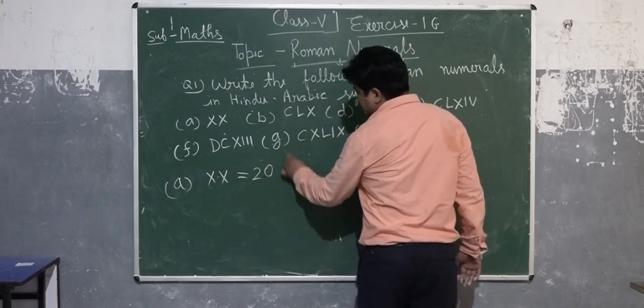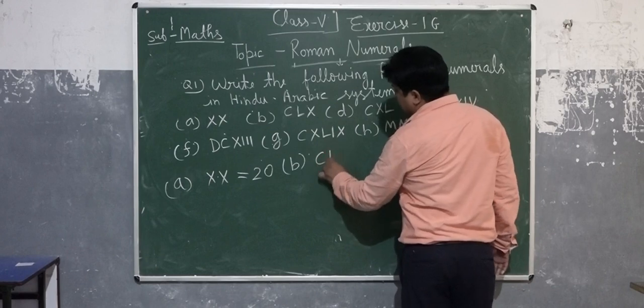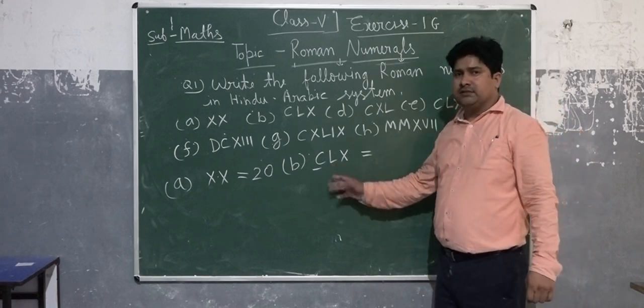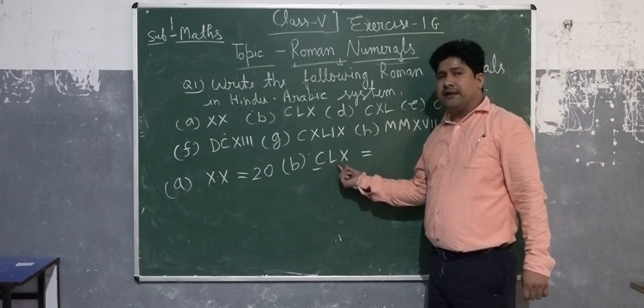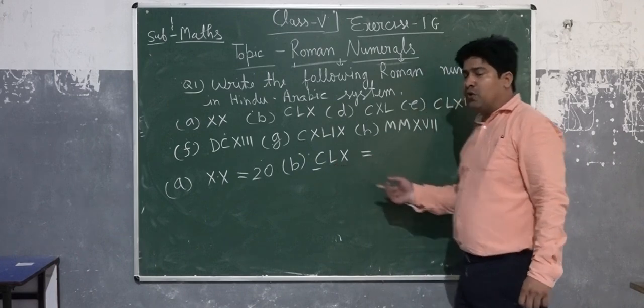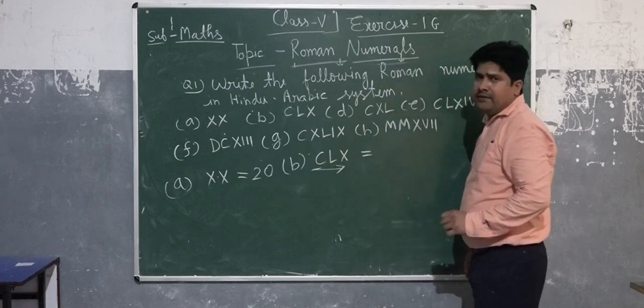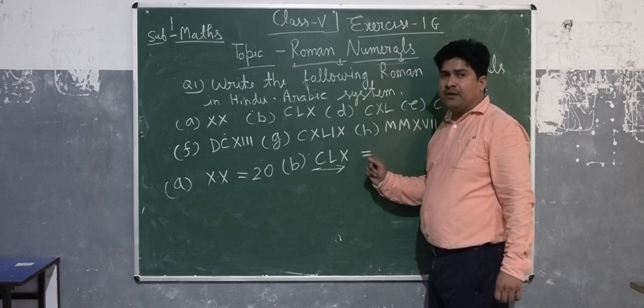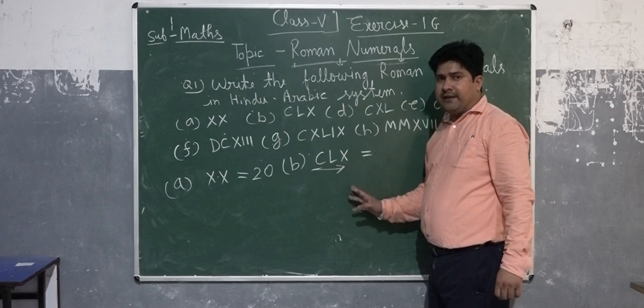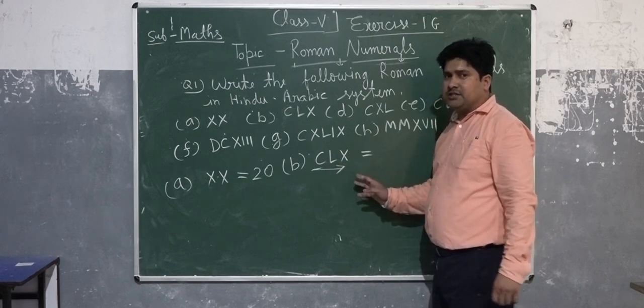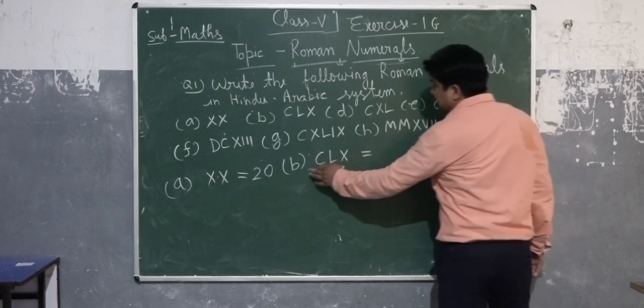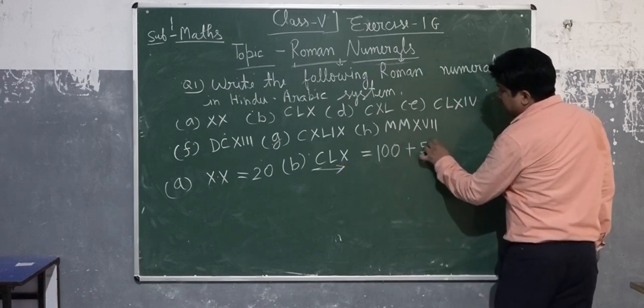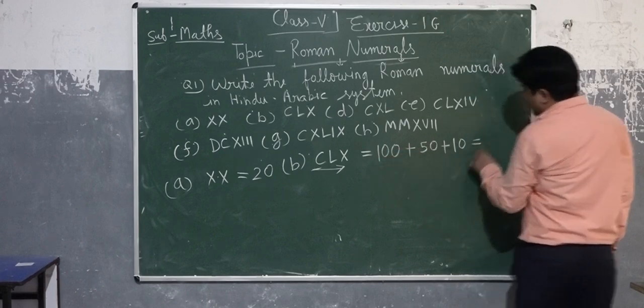10 plus 10 gives 20. For CLXIV, first we're looking at C and LX. C is bigger, but L is smaller and X is smaller than L, so it's going to be decreasing. If you apply the second rule, placing a smaller number in front of a bigger number, what will you do? You will subtract this number. So C is 100, L is 50, X is 10, it gives 160.